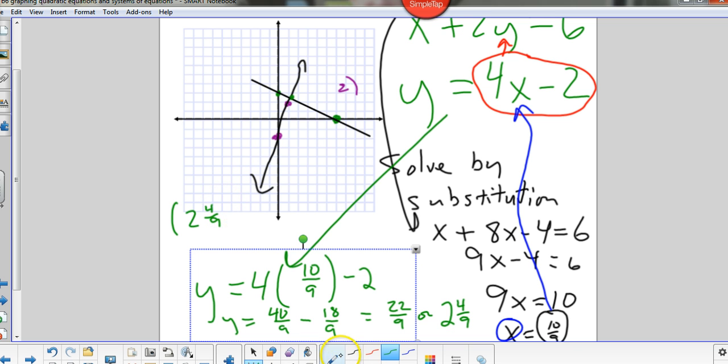But it would have been really impossible almost for me to tell by graphing. So x was 10 ninths, so 10 ninths, comma, 22 ninths. And this would be okay. This would be good. But again, it would be very difficult by graphing to be able to tell that. So, that's when I might use substitution.